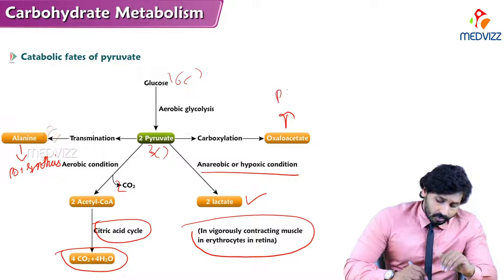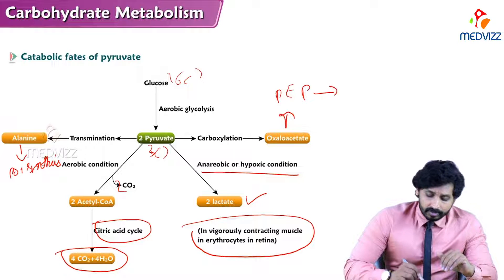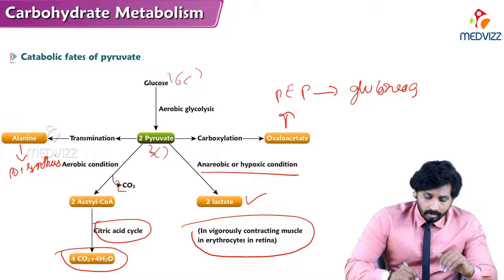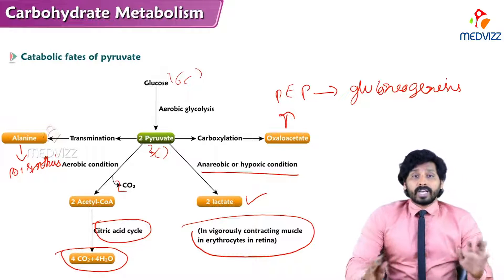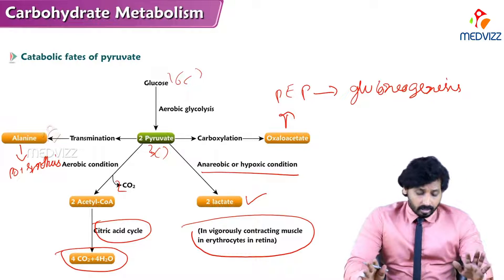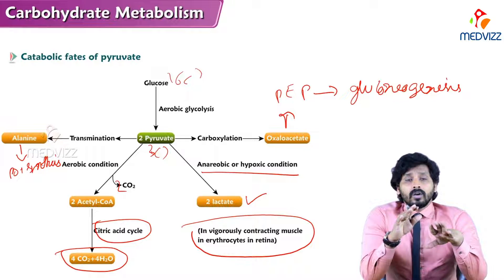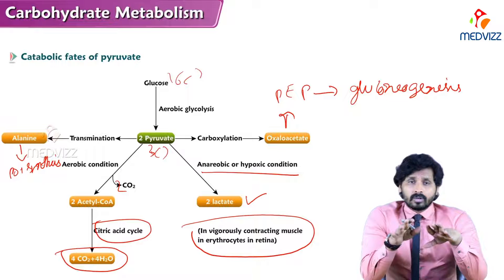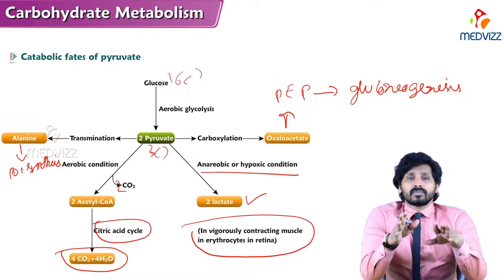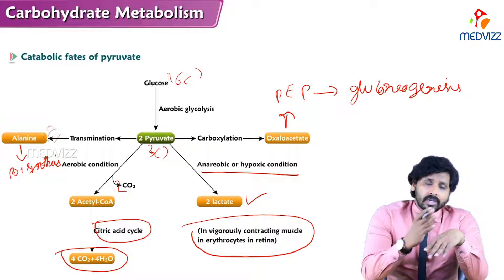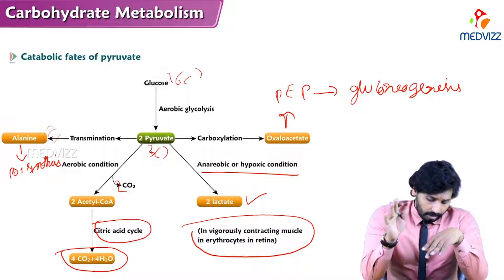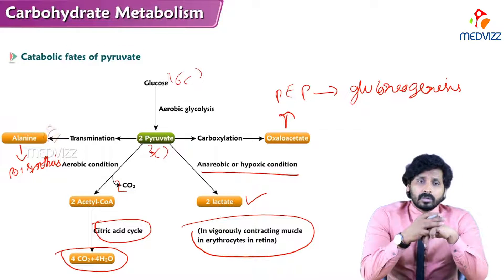Through carboxylation — when you add a carboxylic group to pyruvate — it is converted to oxaloacetate, which then converts into phosphoenolpyruvate, a useful substance for gluconeogenesis. So these are all the possible fates of pyruvate: from pyruvate you can make alanine, an amino acid for protein synthesis, and in the presence of oxygen it undergoes sequential oxidation to remove all carbons.